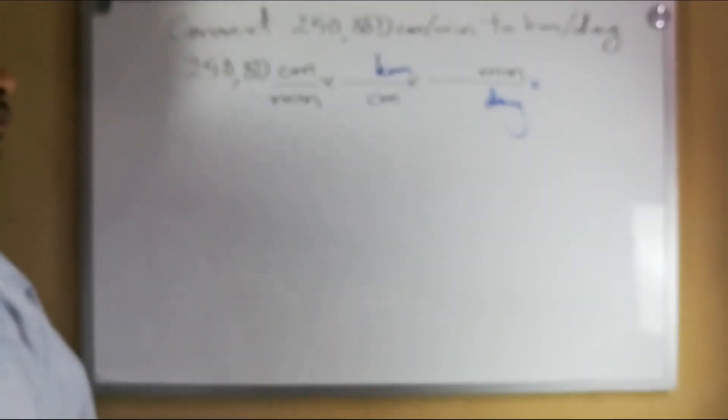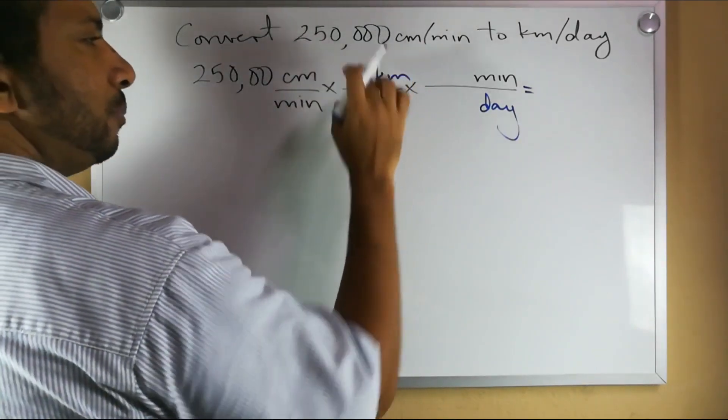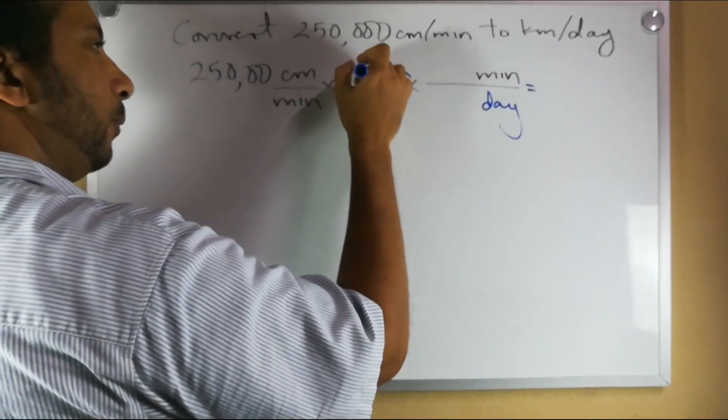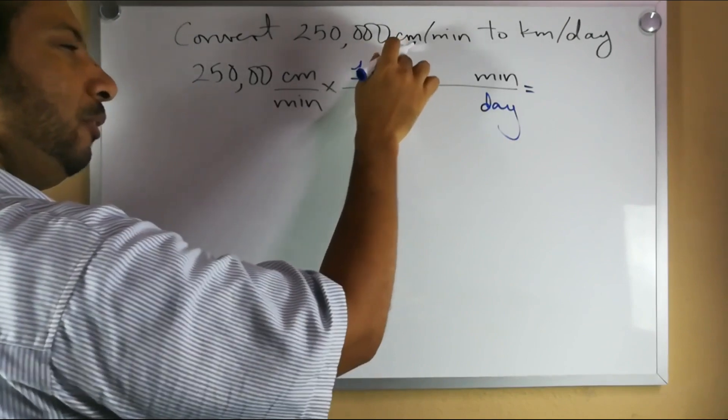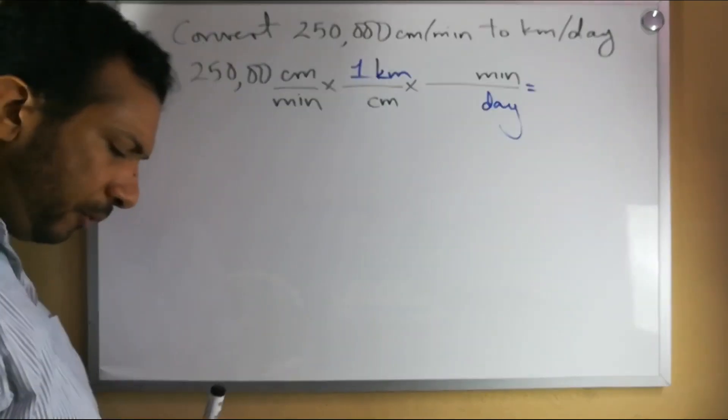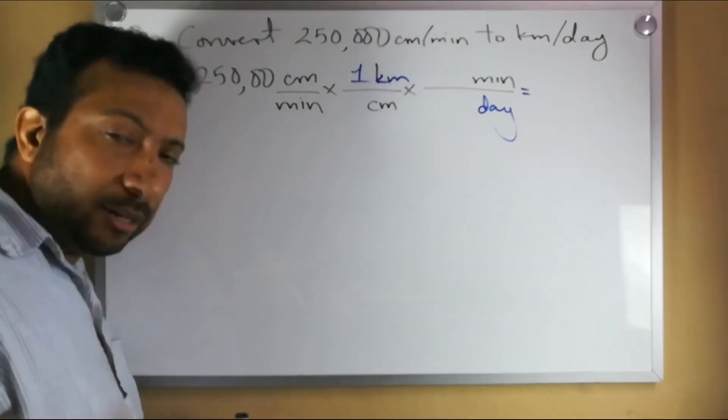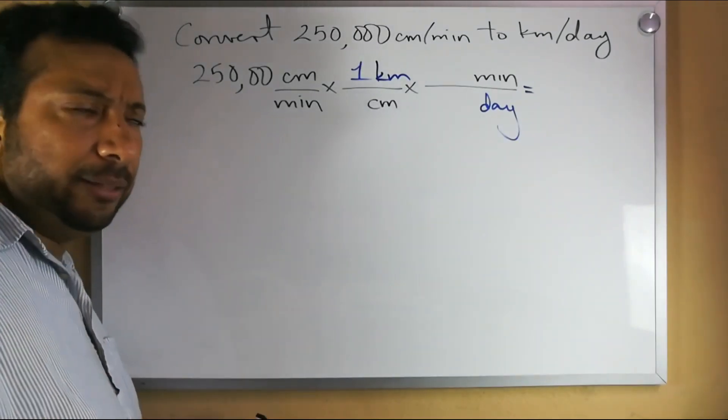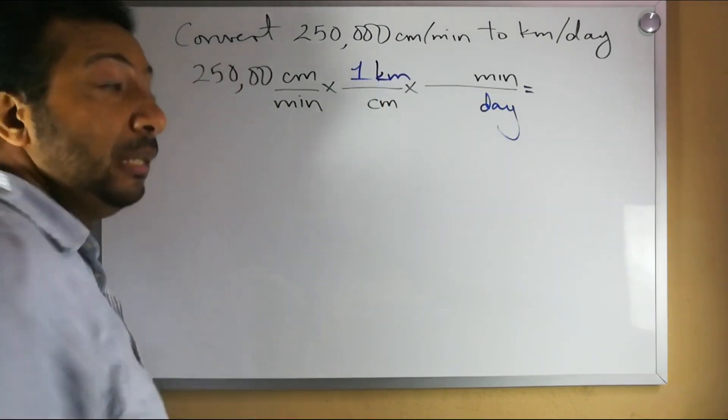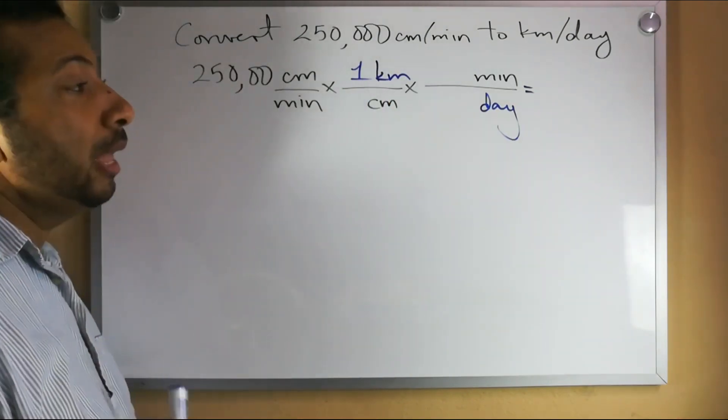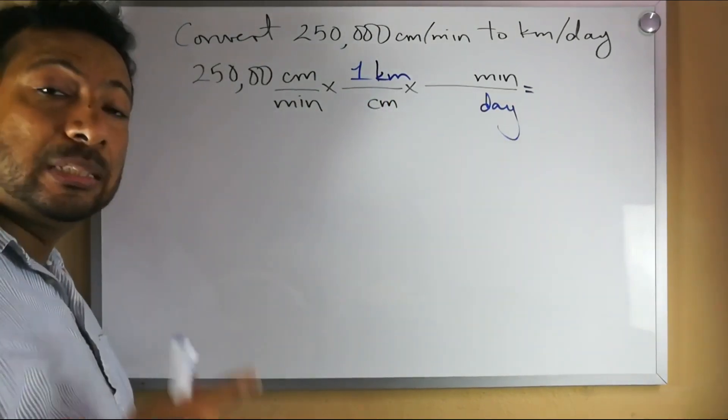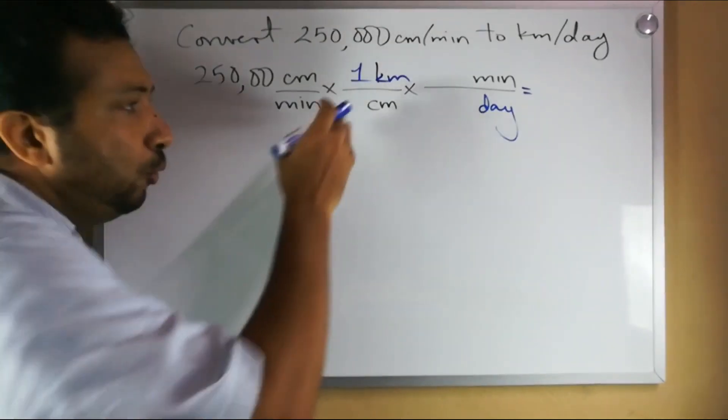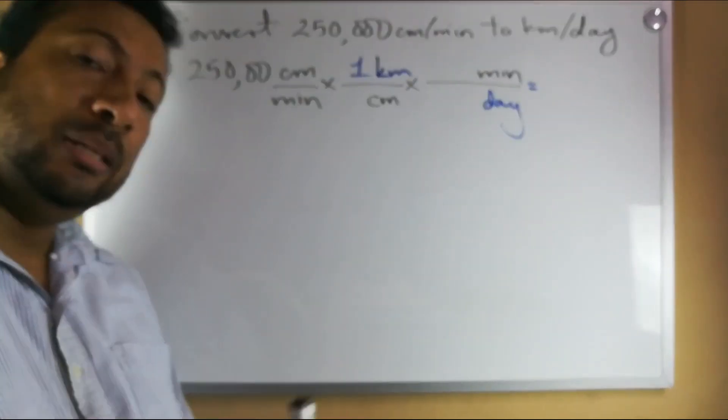So next you need to know how many kilometers make up a centimeter. So one kilometer is how many centimeters? How do we figure that out? You could simply look it up on the internet, it's there for you to see. But you should also be able to do it without that. What does kilo mean again? It means a thousand. What does centi mean? It means a hundred.